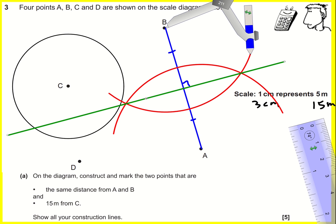So finally, mark the two points that are the same distance away from A and B and 15 meters from C. It's going to be here and it's going to be here. I'll just draw little arrows to make it really clear. That's going to be my answer.